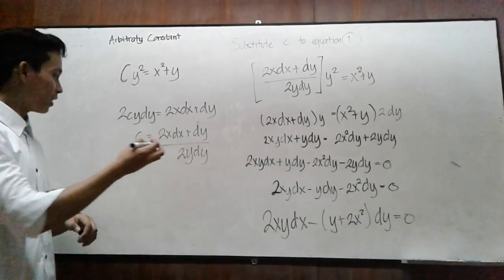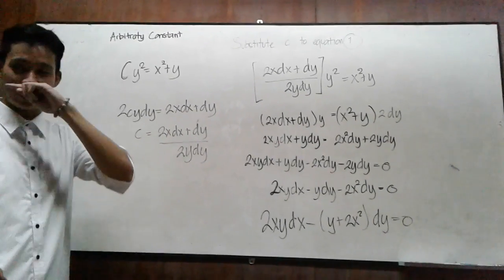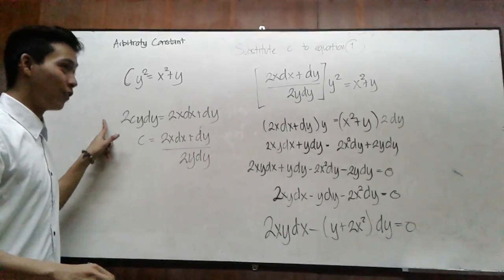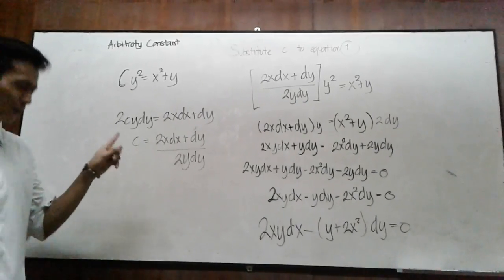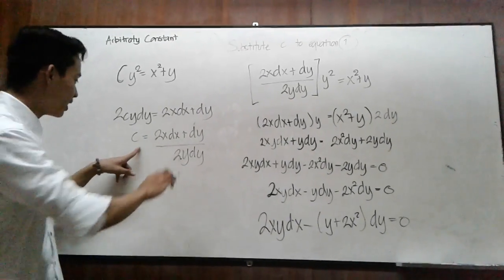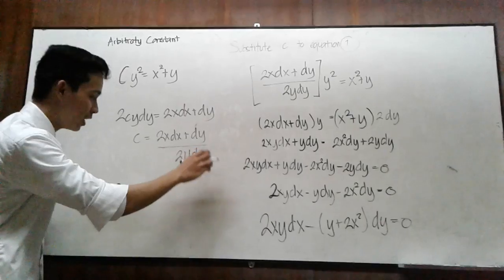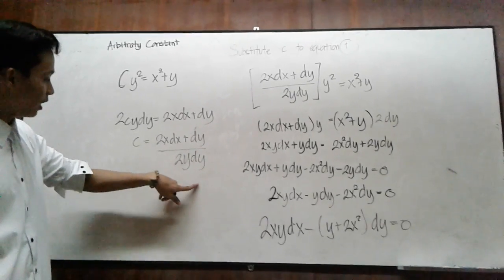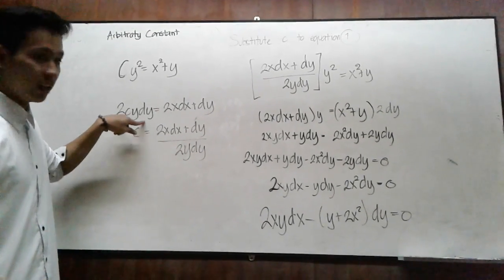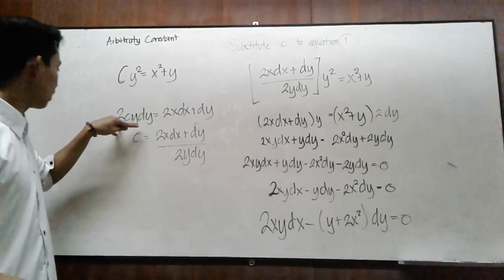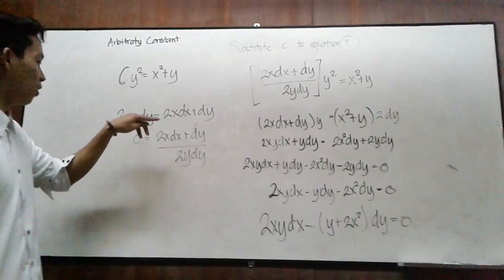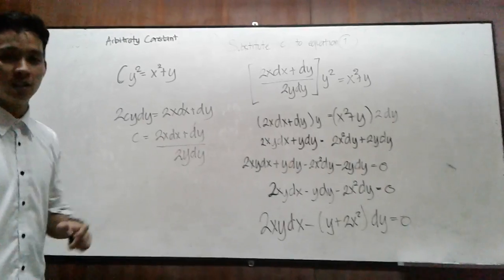The next step is to find the arbitrary constant, which is 2x dx plus dy over 2y dy. To get this answer, you simply cross multiply 2Cy dy to the bottom and just leave C.